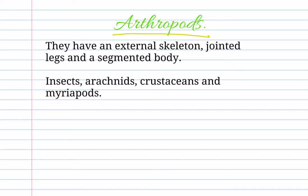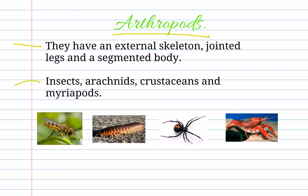Arthropods. They have an external skeleton, jointed legs, and a segmented body. In this group we are going to find insects, arachnids, crustaceans, and myriapods. And I'm giving you some examples: this one is an insect, this one is an arachnid — a spider — a crustacean, and this one is a myriapod.